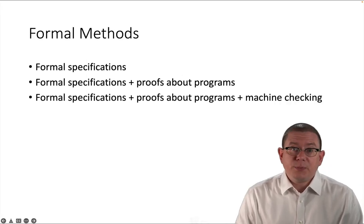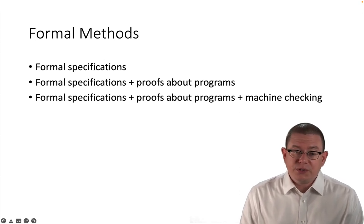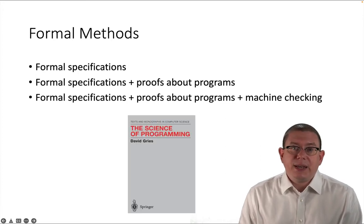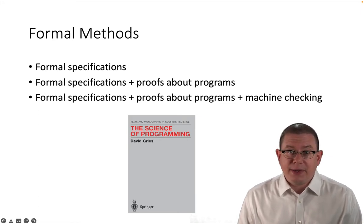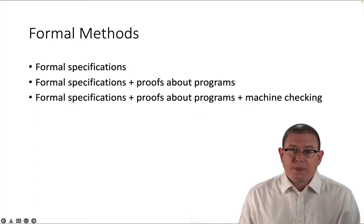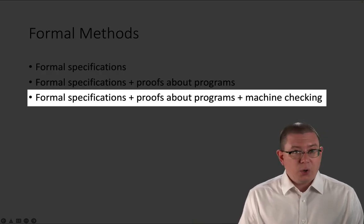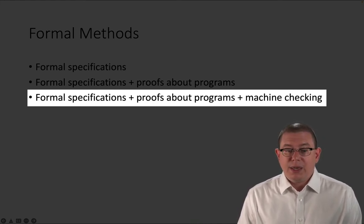Dijkstra's weakest precondition calculus and Hoare's logic of partial correctness assertions are two of the best known methodologies. David Gries's 1981 book The Science of Programming is a landmark presentation of how to apply this kind of methodology. Or, not only are the specifications formal and the programs formally proved to satisfy them, but the proofs themselves are written so formally that a computer can mechanically check them.